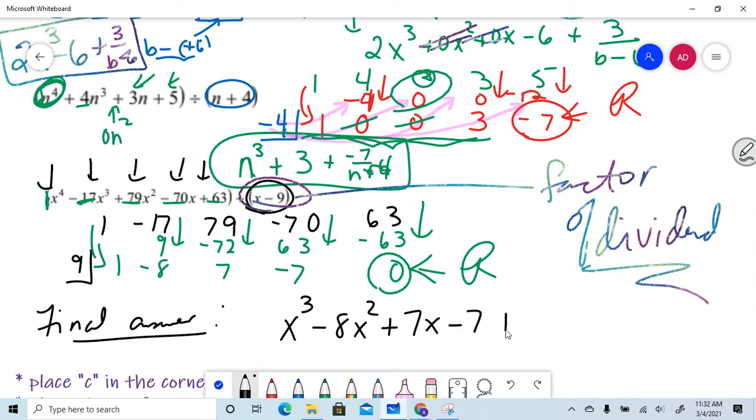And yes, then I have plus zero. But guess what? I don't need to write that because there's my final answer. This is the quotient. And remember, the quotient is the final answer.